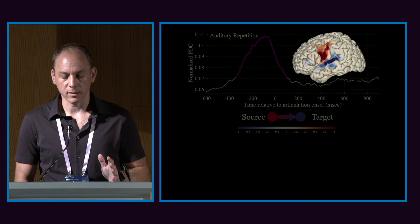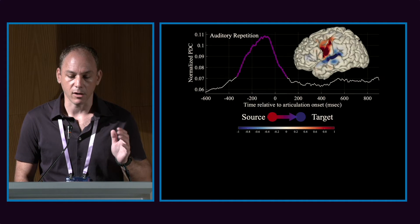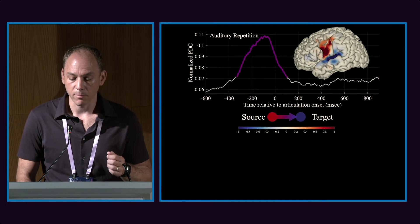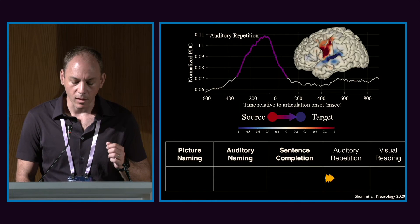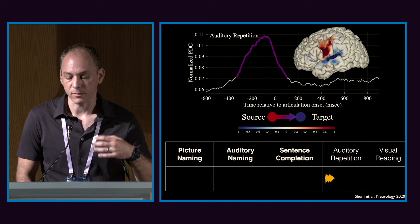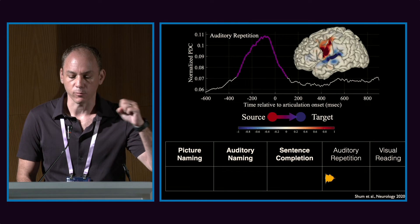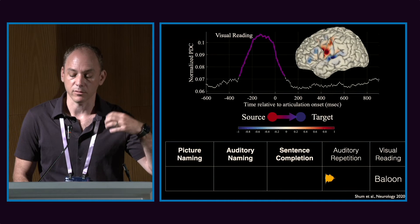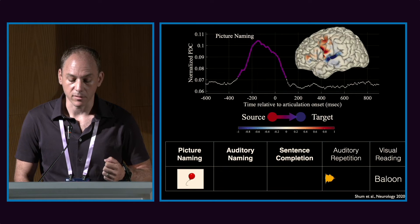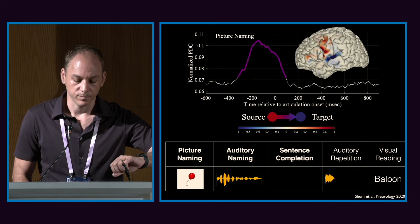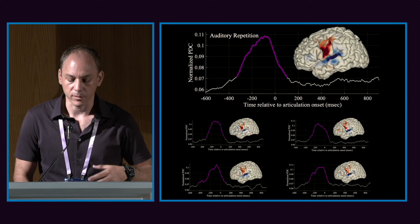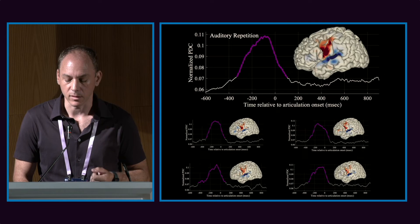Maybe it walks like a duck, but this may be an artifact of the auditory repetition task. Is this a corollary discharge or just information flow due to the task? So we used a battery of tasks, all with the same word target but different lexical routes of retrieval: auditory repetition ('balloon'), visual word reading, picture naming, and sentence completion. Across all of these we were able to replicate the same prototype in terms of timing and overall distribution from motor cortex onto STG.